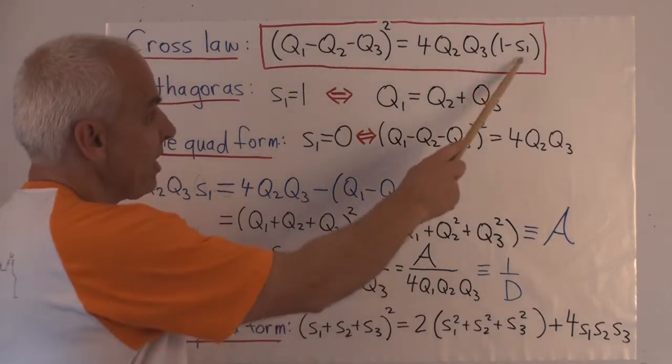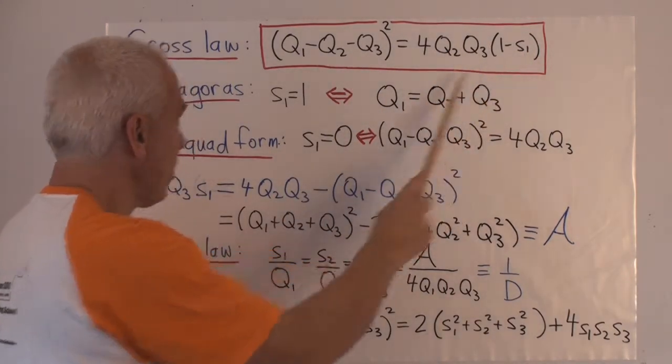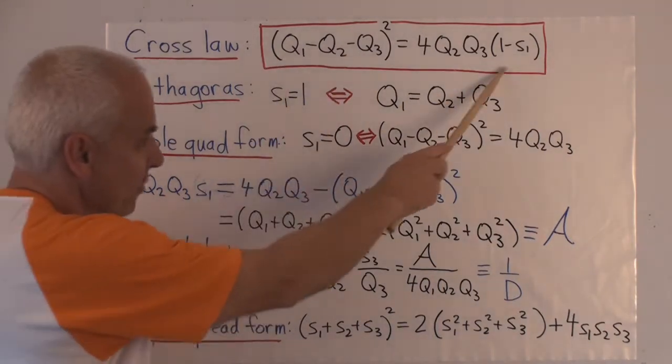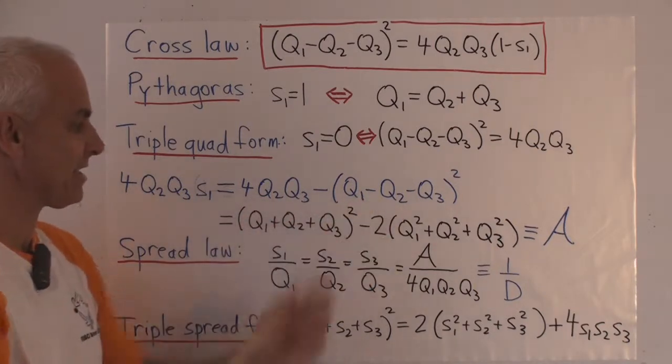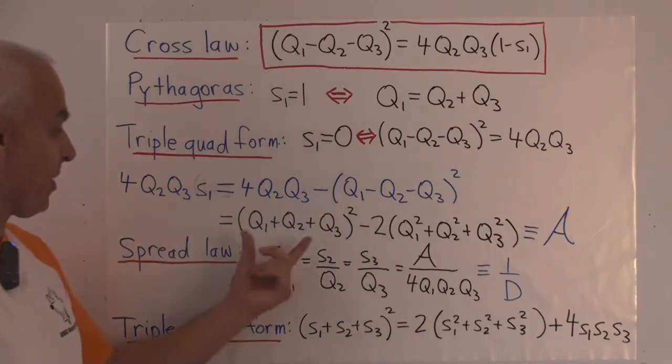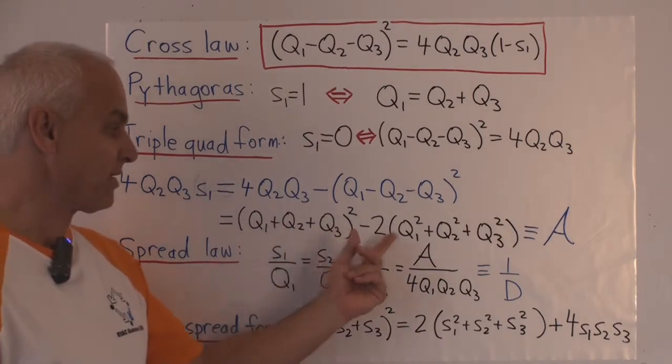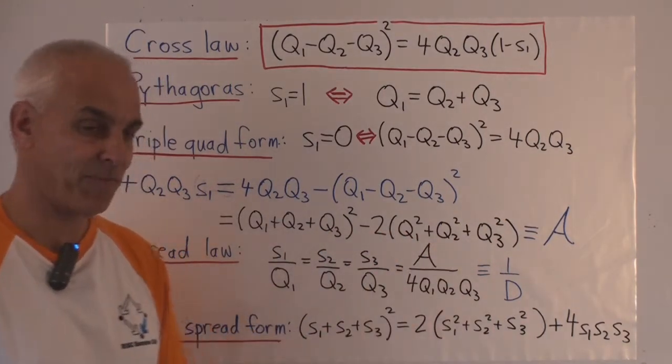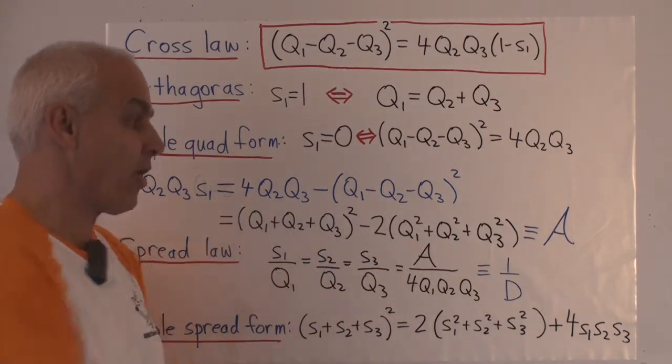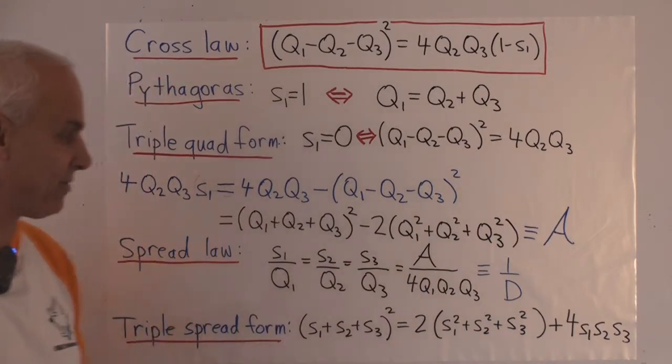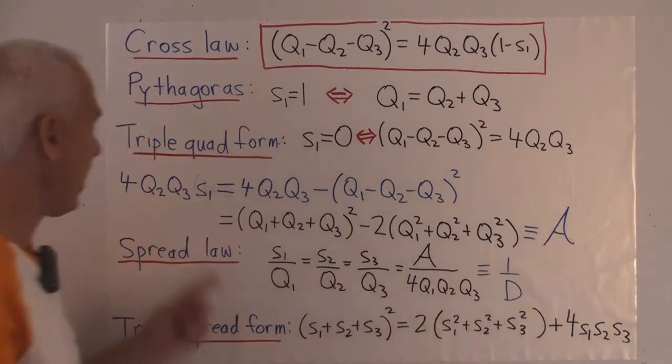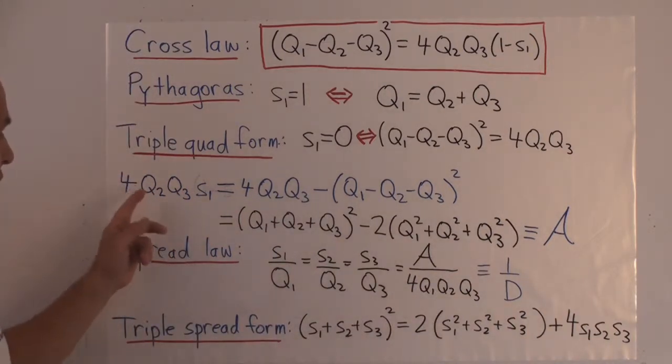Now rearranging this thing here, bringing the four Q2, Q3, S1 term over to this side here, and bringing this part over onto the right side, we get this minus this. And that can be written in a way that's familiar to you now, I hope, as the sum of the Q's all squared minus two times the sum of the squares. And this quantity here, which depends on the three quadrances of the triangle, we call the quadrea of the triangle, denoted by A.